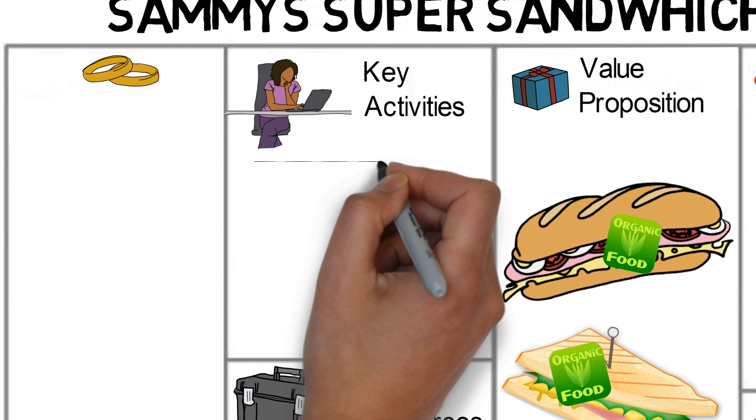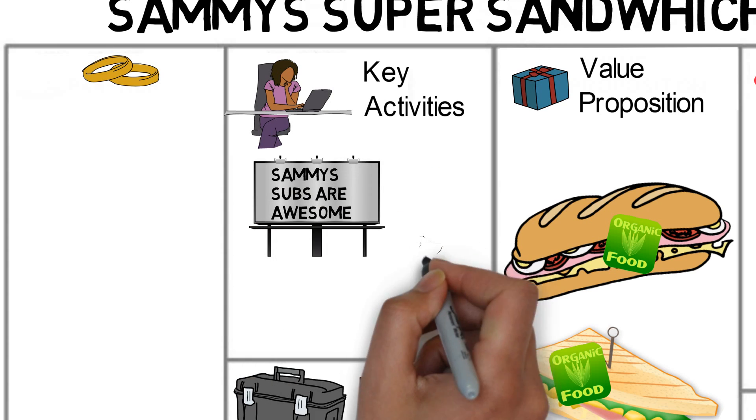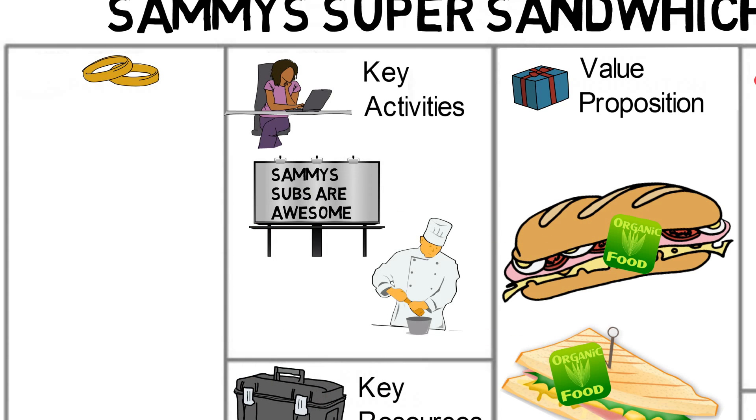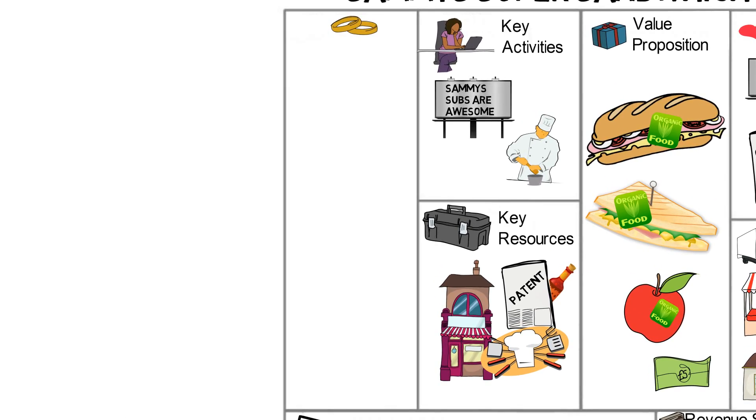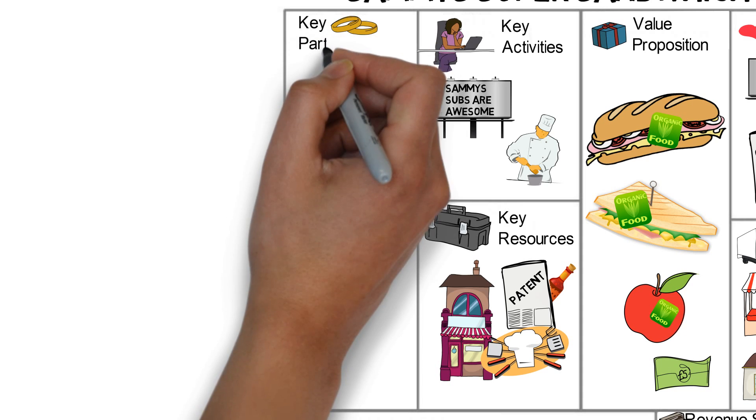After Sammy has identified his key resources, he can move on to his key activities. This would include stuff like his national advertising campaign and creating new delicious sandwiches that all of his customers would enjoy. After Sammy knows how he's going to pull everything off, it's time that he identified his partners.